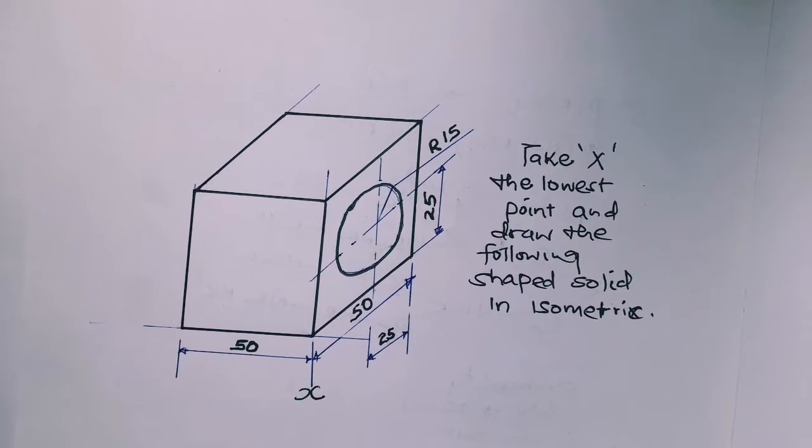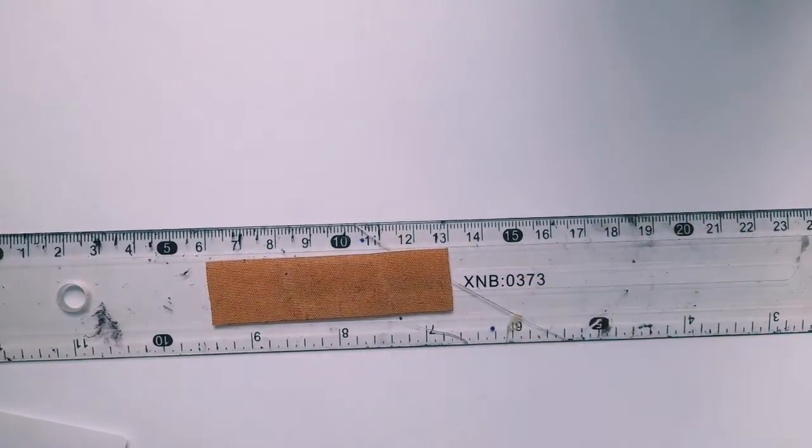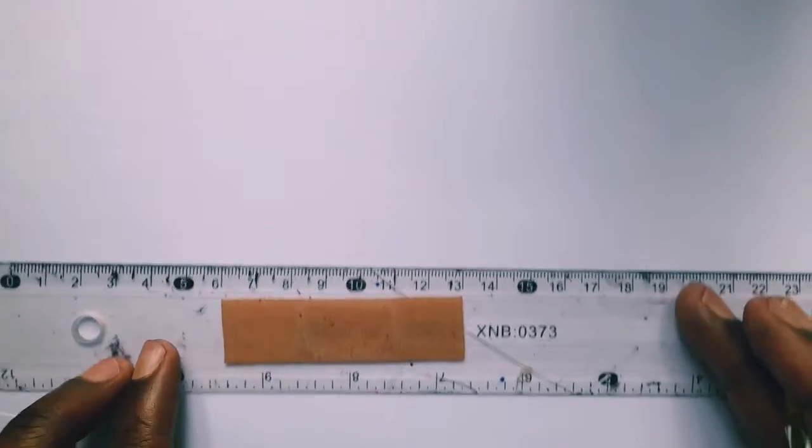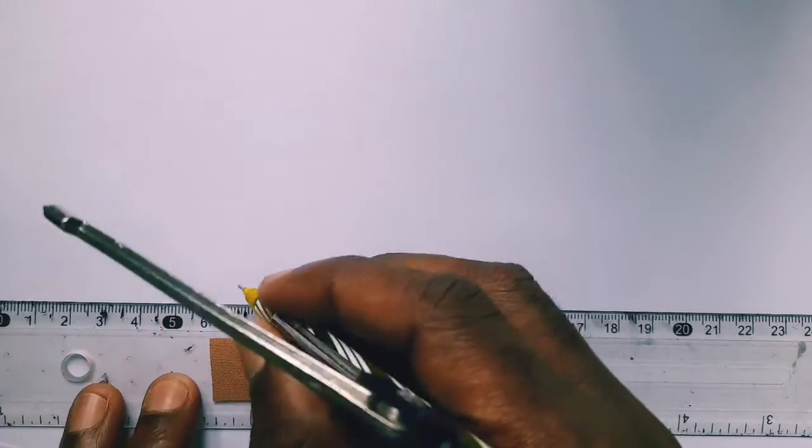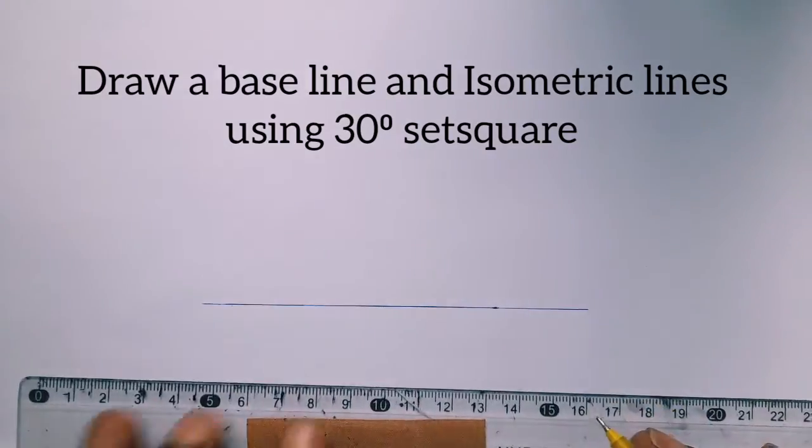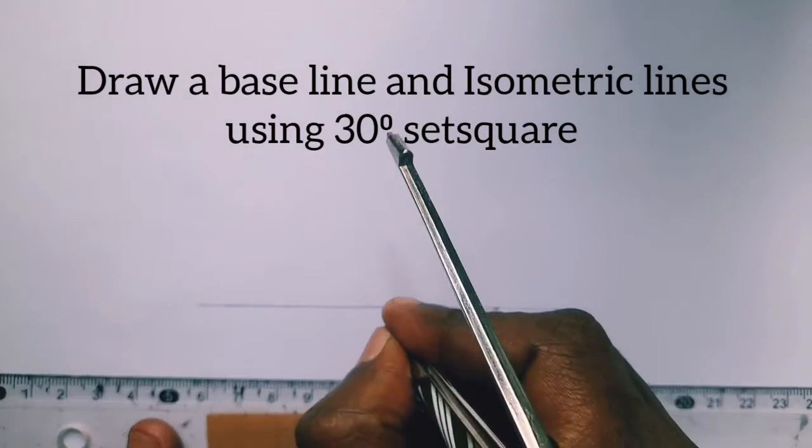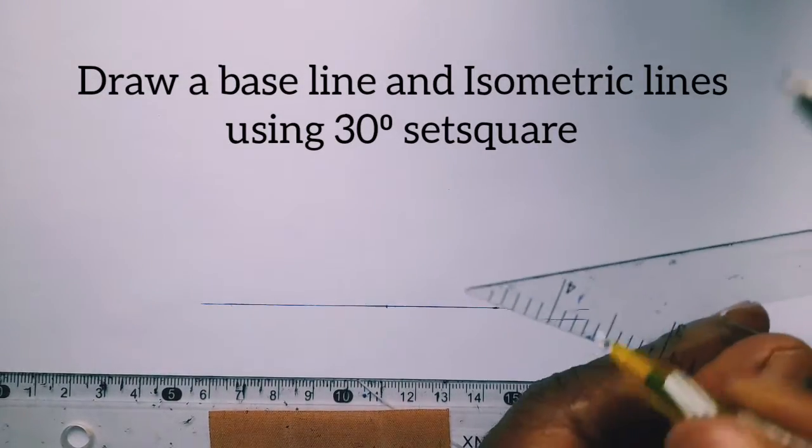Hello, welcome to my YouTube channel. I want to draw this shaped solid in isometric, taking X as the lowest point. Start with the baseline, that's a horizontal line. Then we have to draw isometric lines which are 30 degrees using a 30-degree set square.